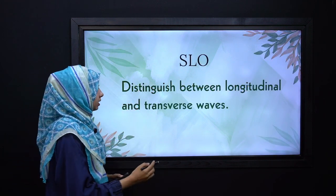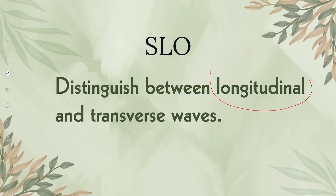So we move towards our SLO in which we distinguish between two types of waves that we learned in our previous lecture. The first one is the longitudinal wave and the second one is the transverse wave.